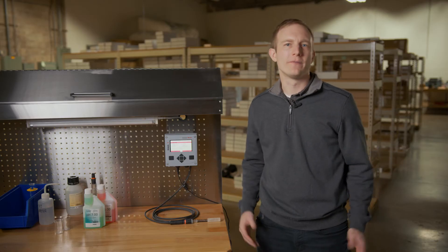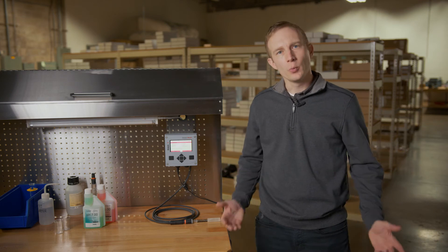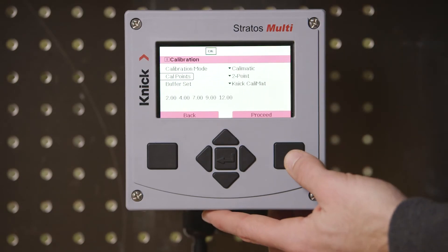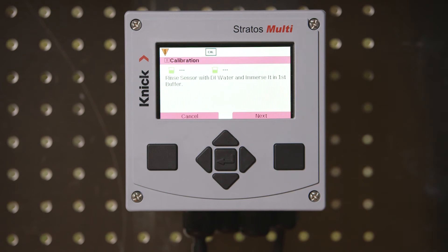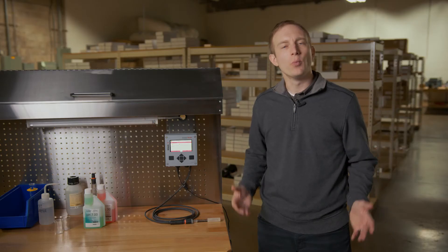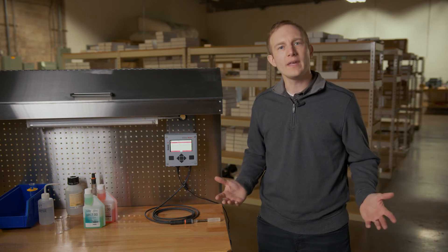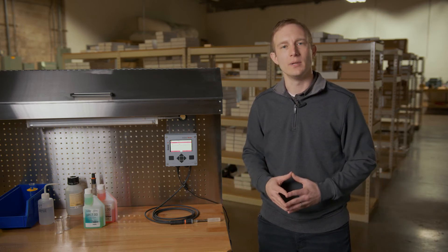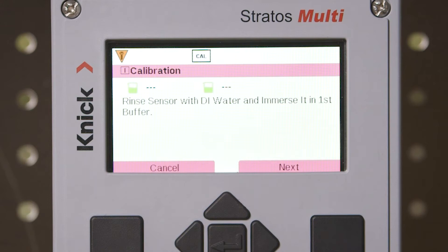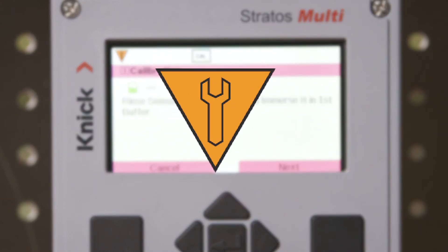Once we are ready to perform our calibration process we will press enter on the proceed button to move on to the first steps. As you can see once the calibration process begins the transmitter enters a hold mode holding the output back to our control system. This is also indicated by the wrench icon in the upper left corner of our display screen.